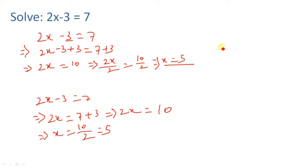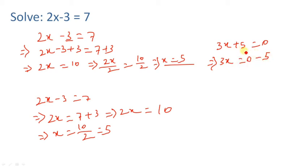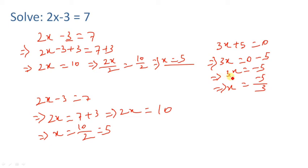Now another example: 3x plus 5 equals 0. We take 5 to the other side — plus 5 becomes minus 5. So 3x equals 0 minus 5, meaning 3x equals minus 5. Therefore x equals minus 5 divided by 3. Since 3 is multiplied with x, it will be divided on the other side.